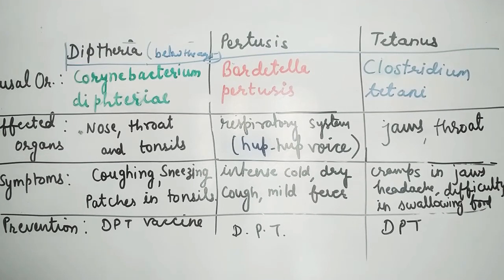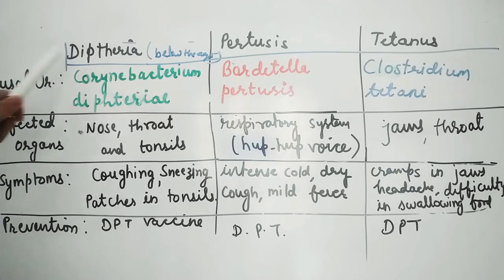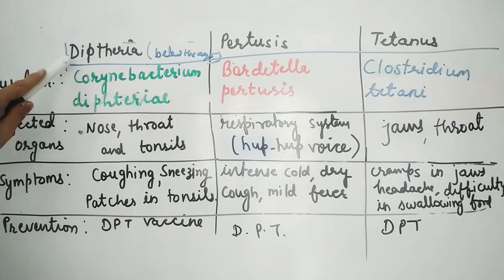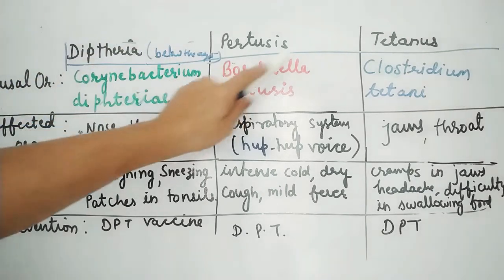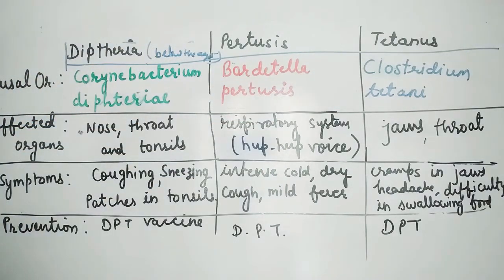Hello everyone. We were talking about bacterial diseases in humans. We have discussed tuberculosis in the previous video. Now we will be studying about three more bacterial diseases: diphtheria, pertussis, and tetanus. We will study them together.